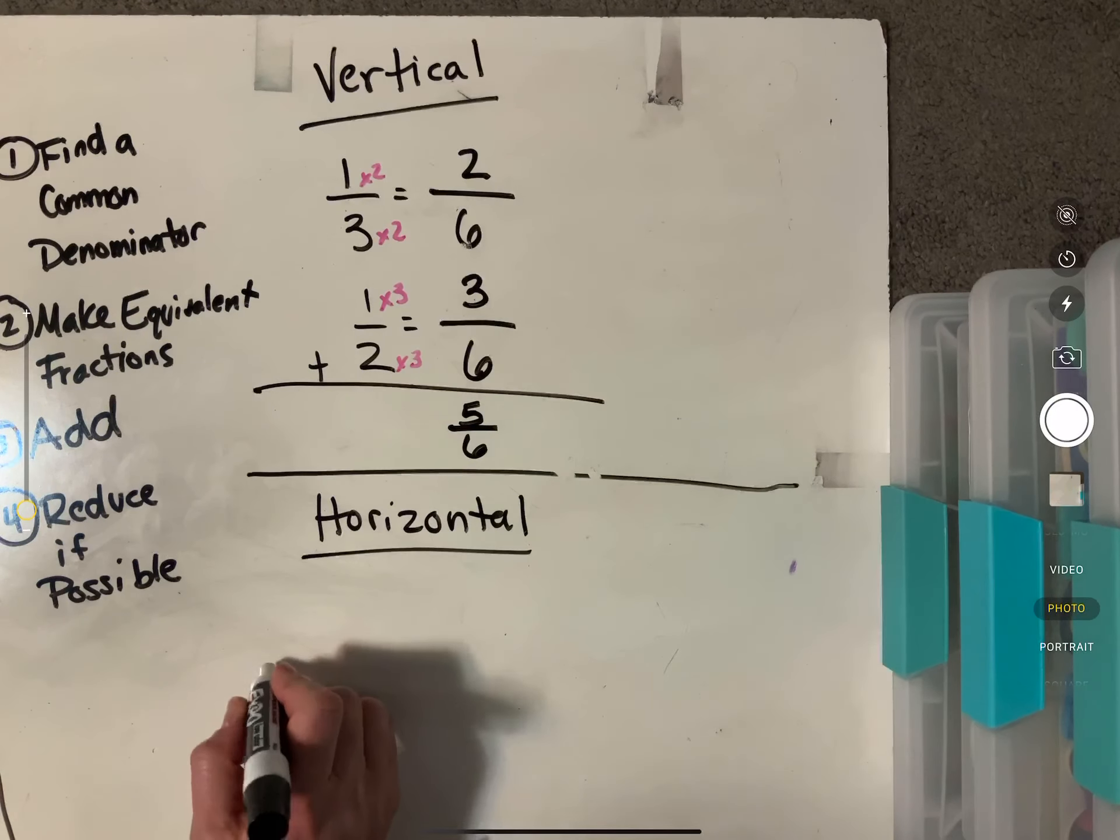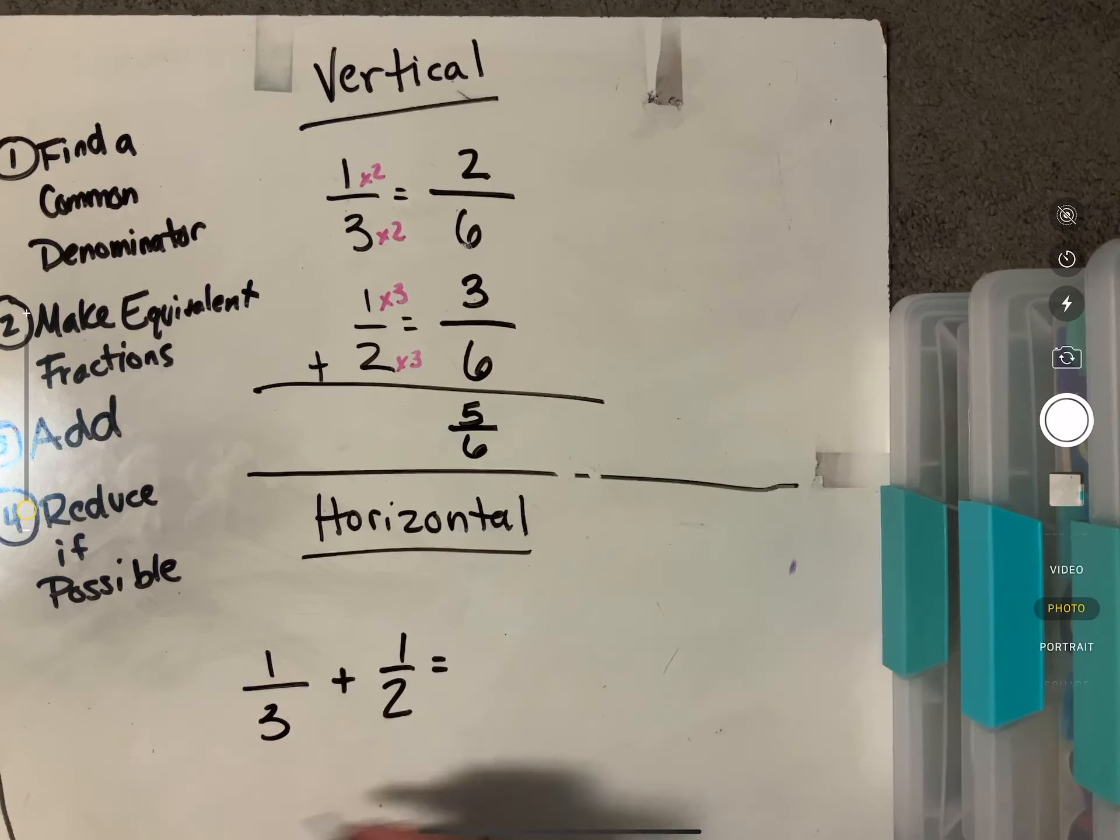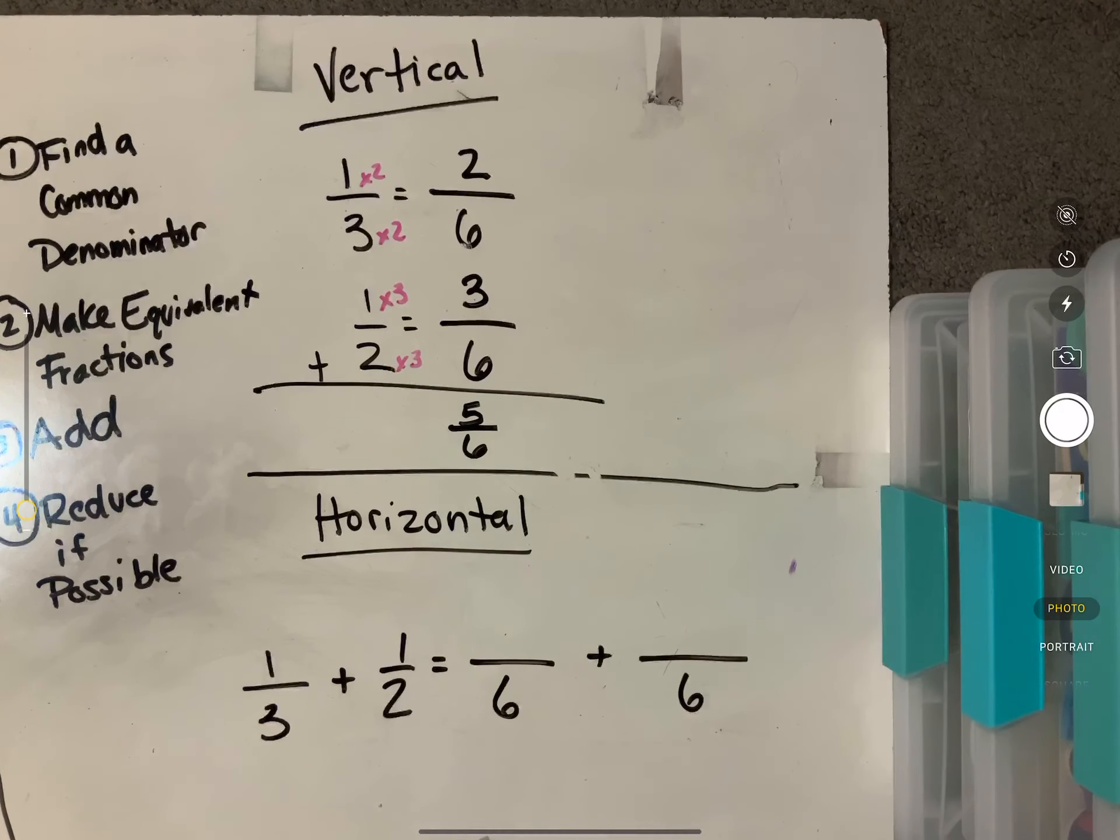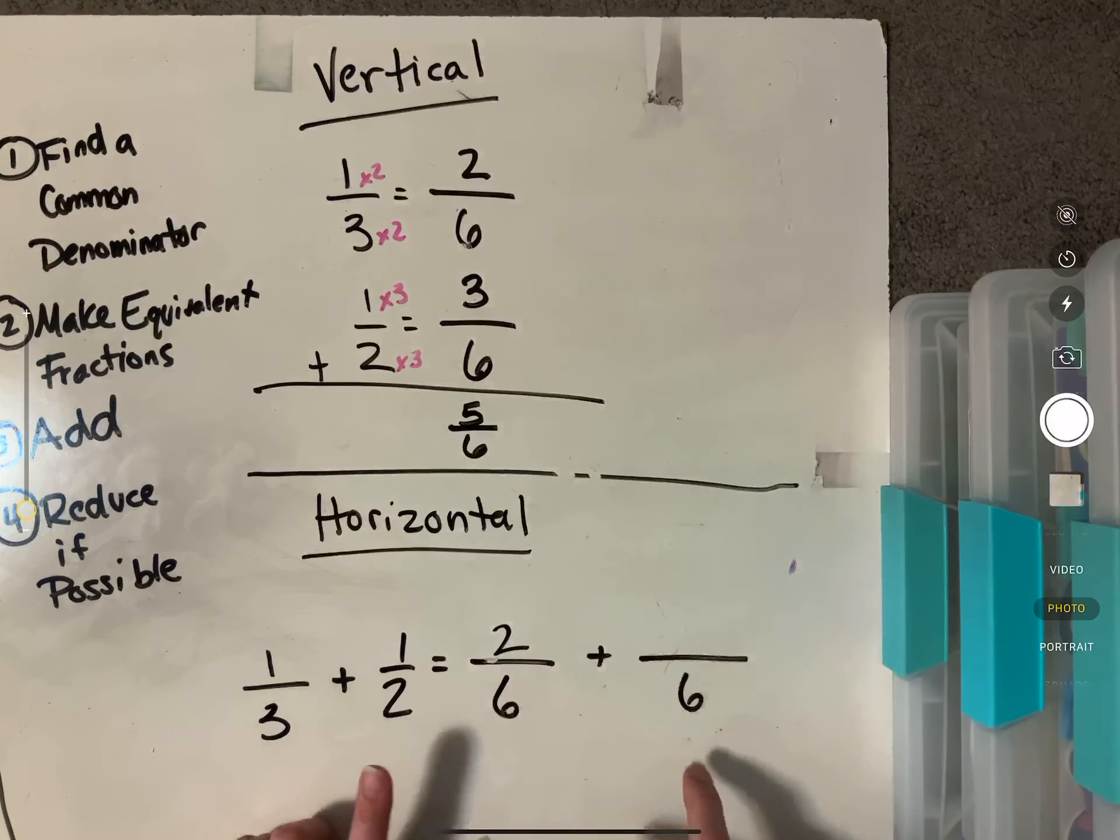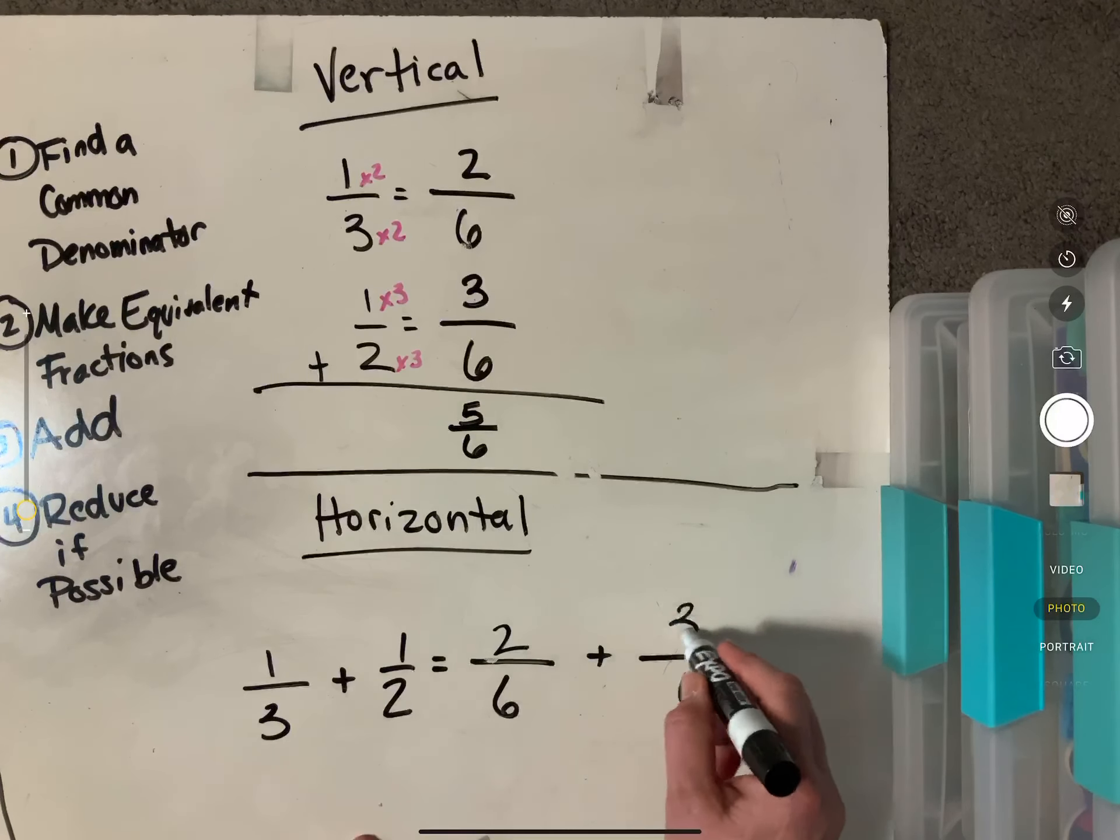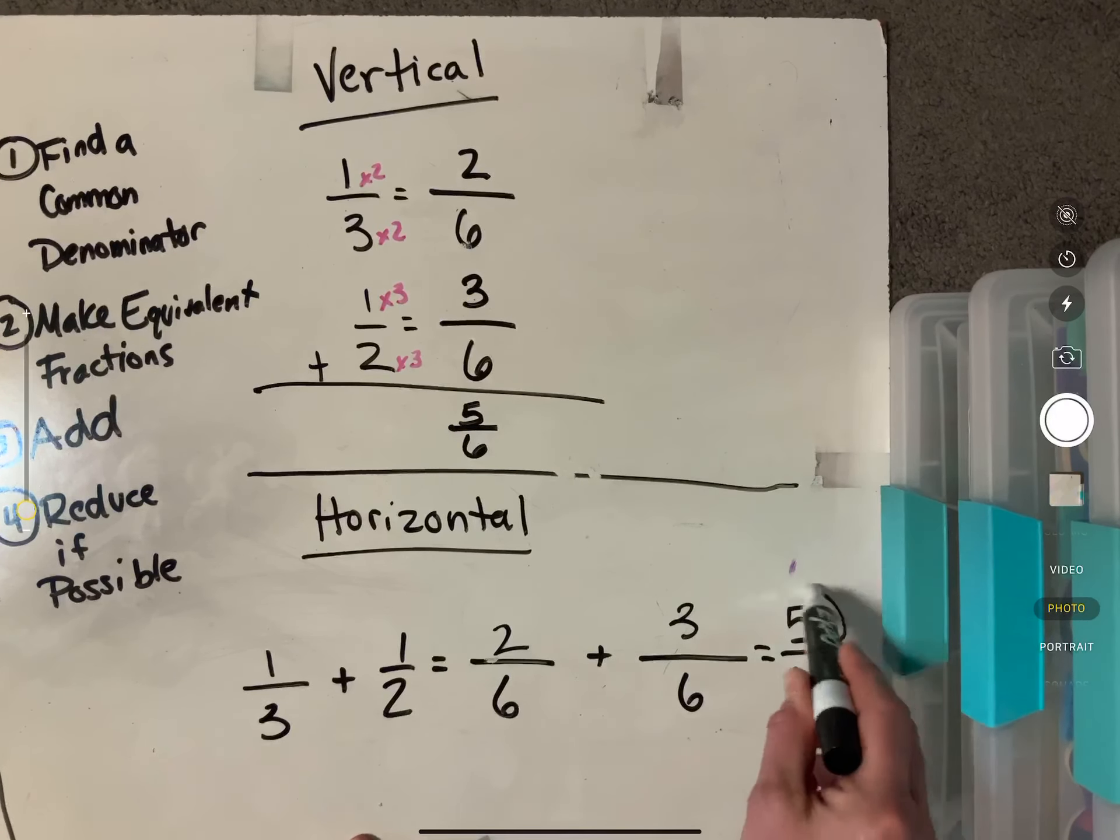The horizontal method will look like this. One third plus one half equals. And again, we're going to have our common denominators here and we have to compare here. We have to use these two fractions. And the only reason that I think the horizontal is a little tricky is just because they are a little farther apart. So three times two is six. One times two would be two. So my two goes up here. Two times three is six. So one times three is three. You add those up. Two plus three is five. And my denominator is six.